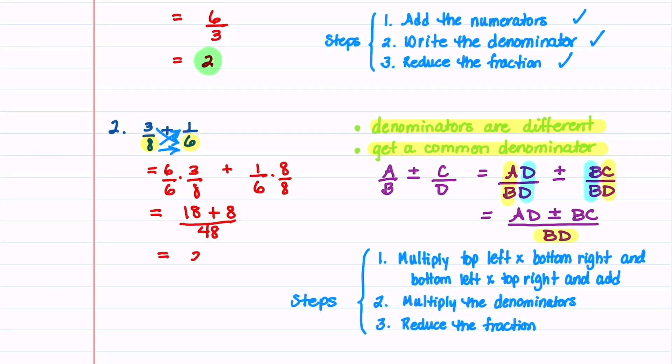This gives us a numerator of 26, and a denominator of 48. We'll then simplify this fraction by noticing that each number can be divided by 2. 26 divided by 2 is 13, and then 48 divided by 2 is 24. And that's our final answer.